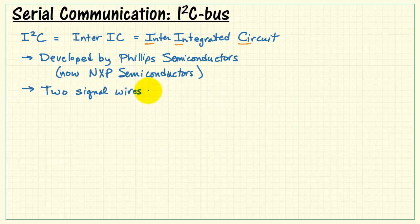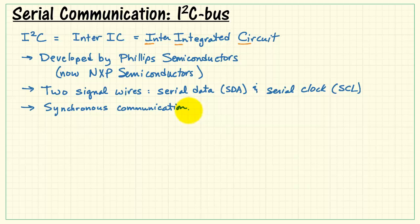I2C bus has only two signal wires: one for serial data, designated SDA, and a second for serial clock, designated SCL. Because we have a dedicated serial clock line, this is a form of synchronous communication.